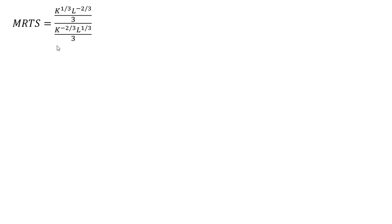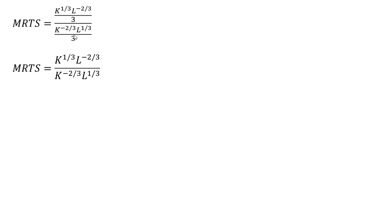We're rewriting the marginal rate of technical substitution and simplifying it a little bit. The 3's will cancel — if we multiply the top and the bottom, the numerator and denominator, by 3, we'll lose the 3 terms.